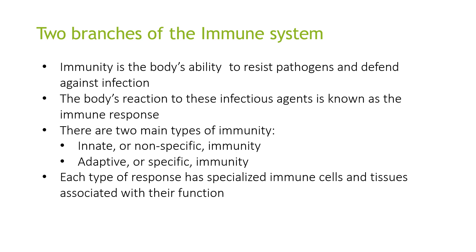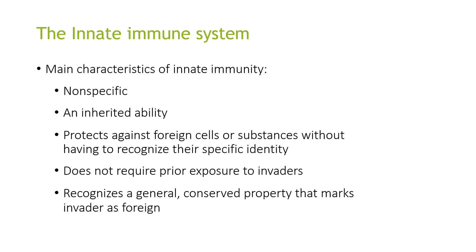Each type of response has specialised immune cells and tissues associated with their functions. The key point to note is that innate immunity is non-specific and adaptive immunity is specific. The main characteristics of innate immunity are that it is non-specific, it has an inherited ability, and it protects against foreign cells or substances without having to recognise their specific identity. It does not require prior exposure to invaders and it recognises general conserved properties that mark invaders as foreign.